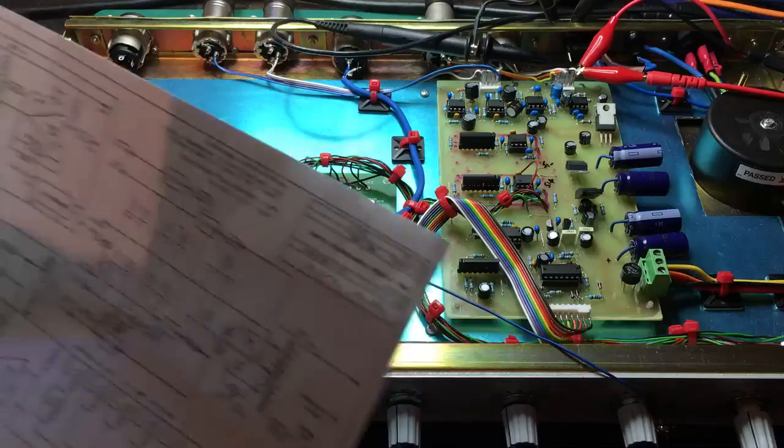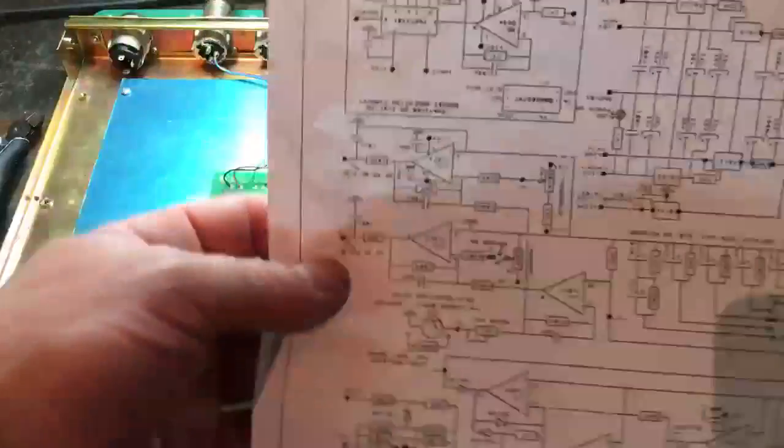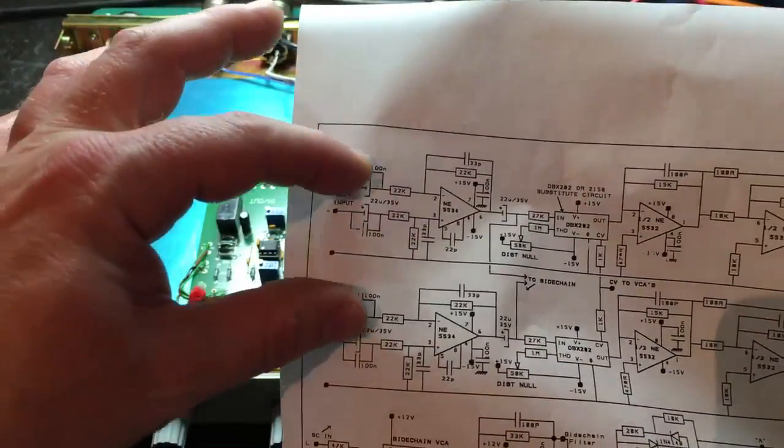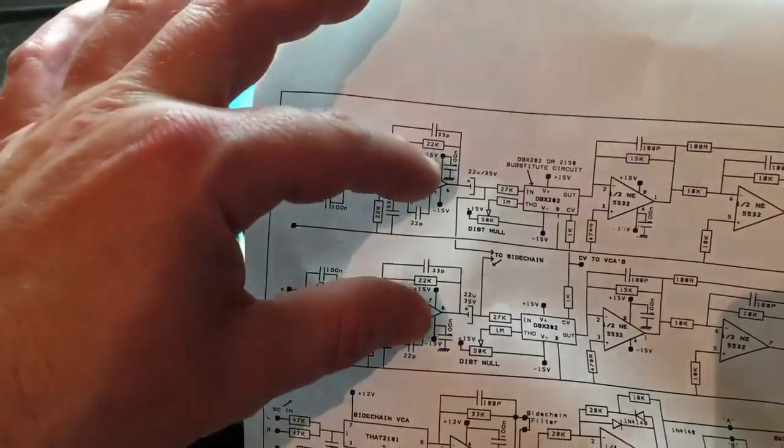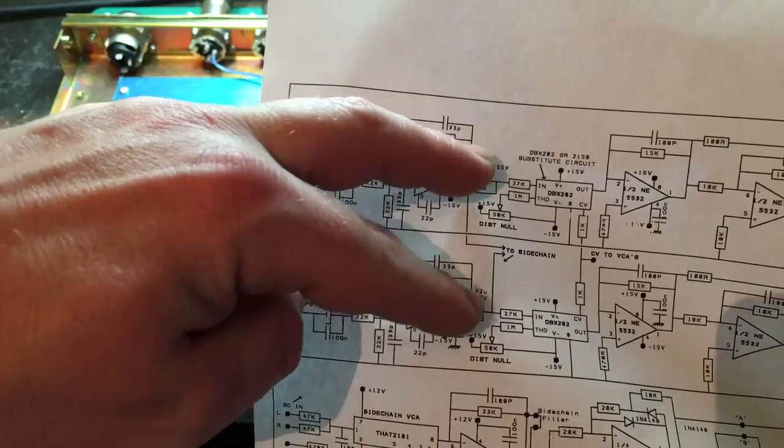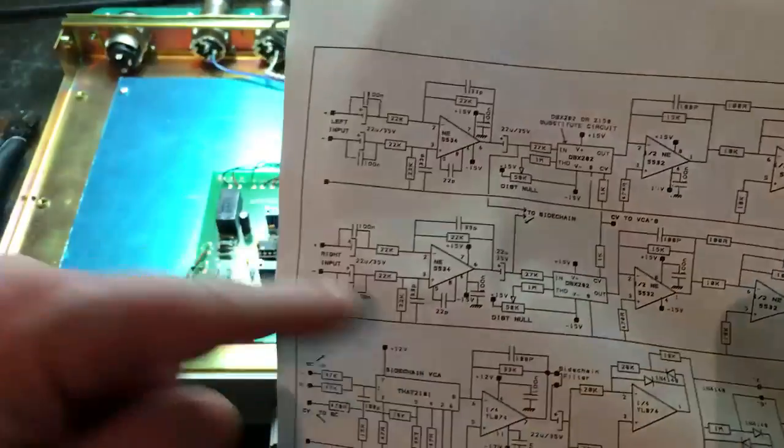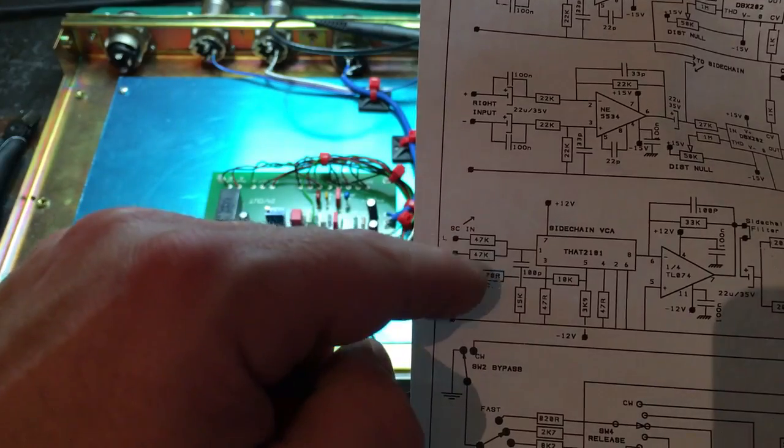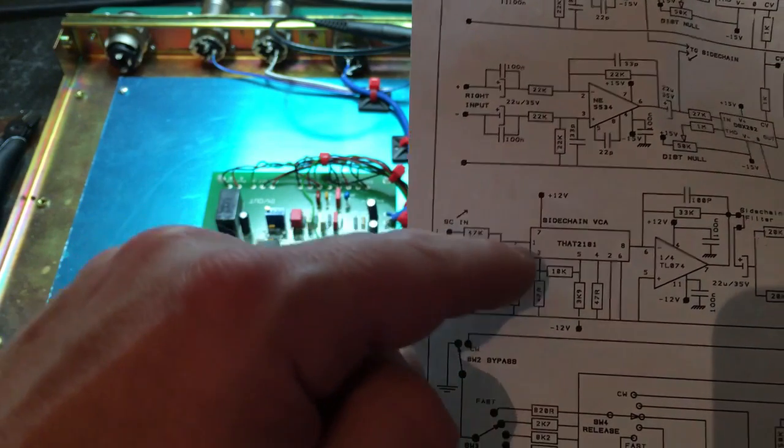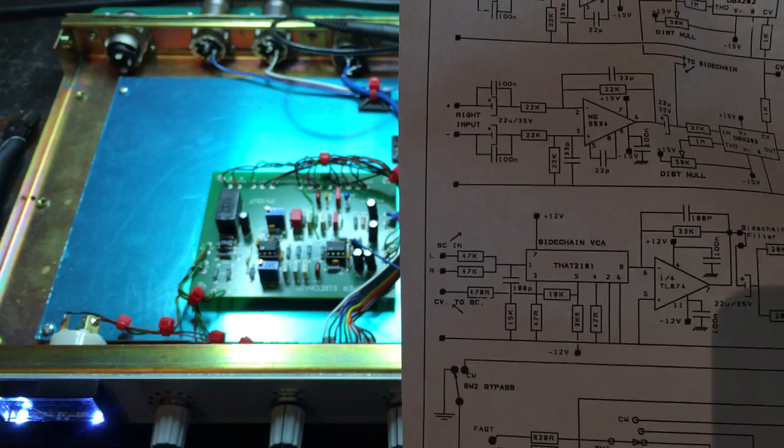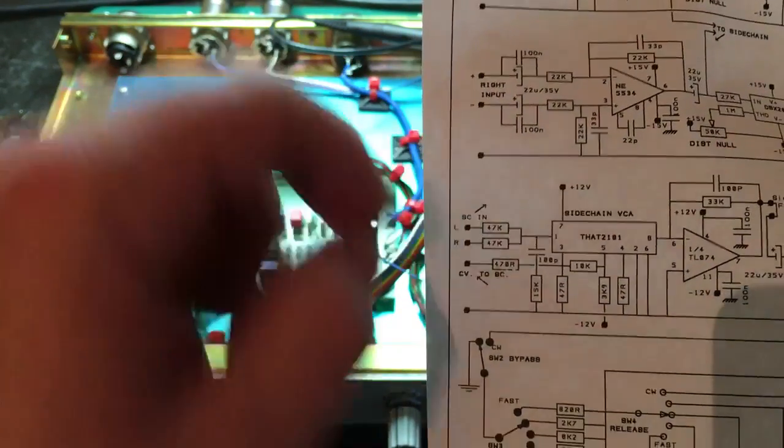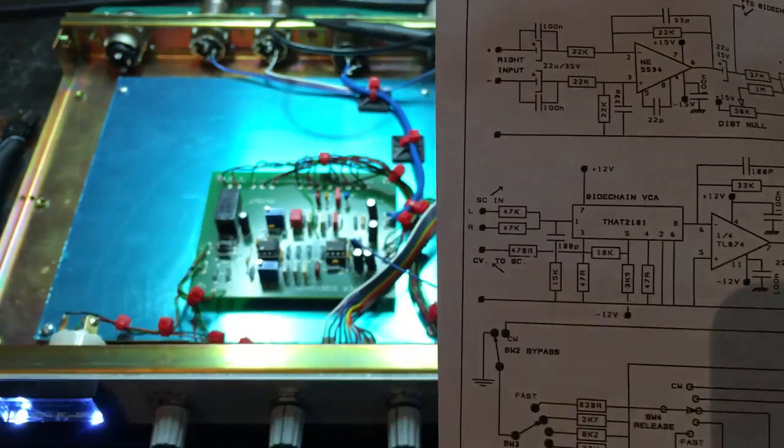OK, so there was no schematic for the Super Sidechain but it's quite simple to work out. The left and right inputs come in here through these op-amps and then after these capacitors a copy of that goes to the Sidechain input. And after these 47k resistors they get summed into the Sidechain VCA and we really need to take our signal from this side of the resistors as this is a current input.